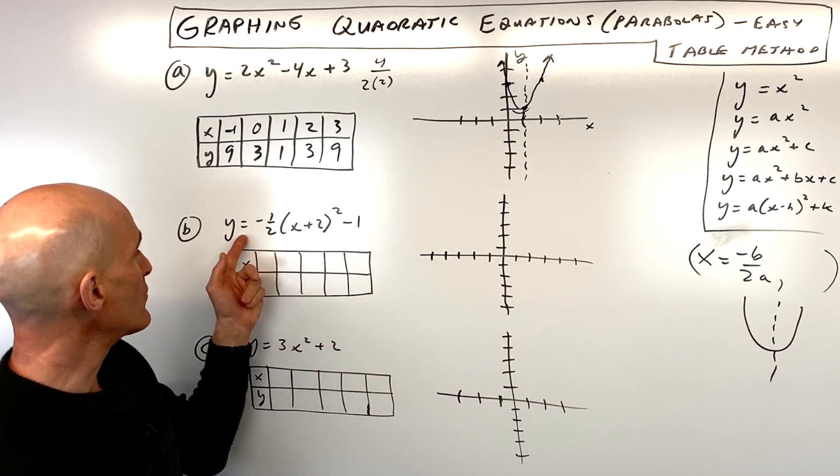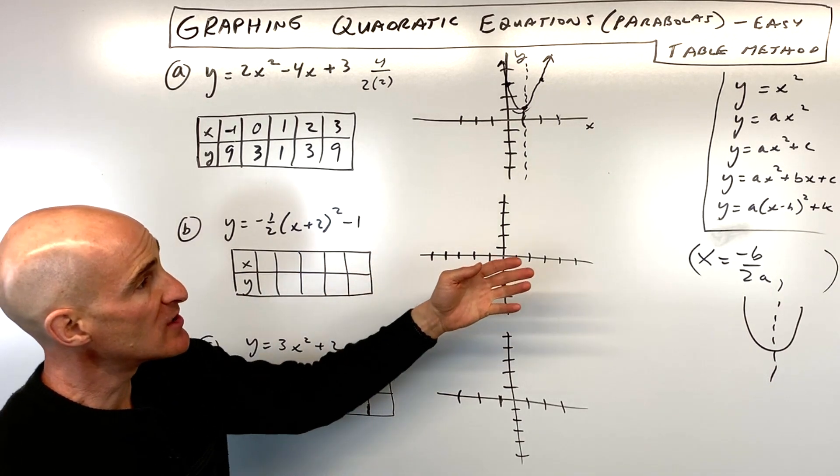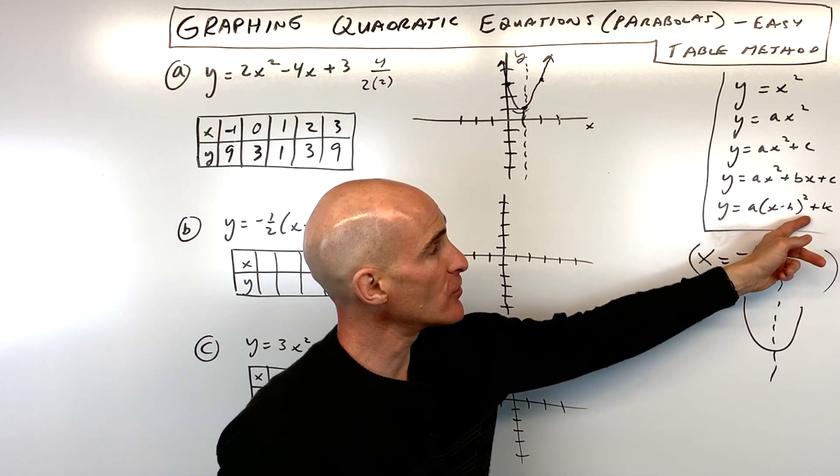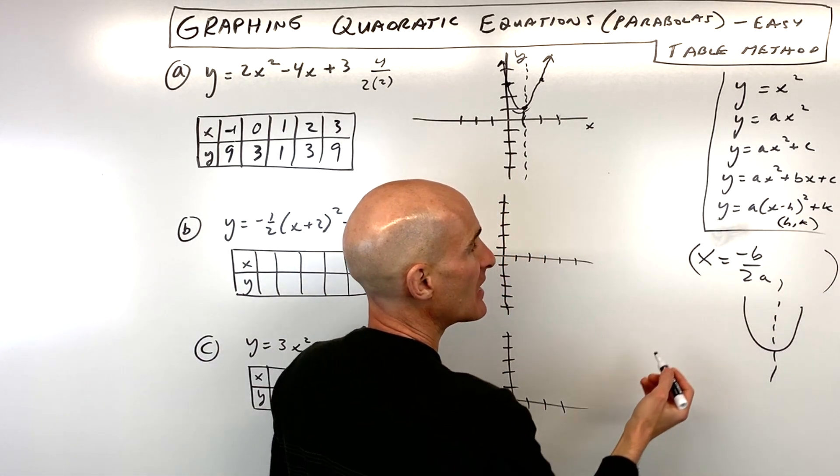Okay, let's look at a different example. Letter B, y equals negative one-half times (x plus 2) squared minus 1. So this is in this form right here. This is referred to as the vertex form. And our vertex is going to be this point (h, k).